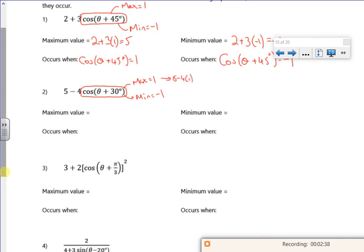So if I put 1 in, I've actually got 5 minus 4 lots of 1, that's a 5. And if I put minus 1 in, I get 5 minus 4 lots of minus 1. So this one, the maximum value on the cos graph occurs at 1, but in this specific example it actually gives me the biggest value for the whole equation if I use the minus 1.